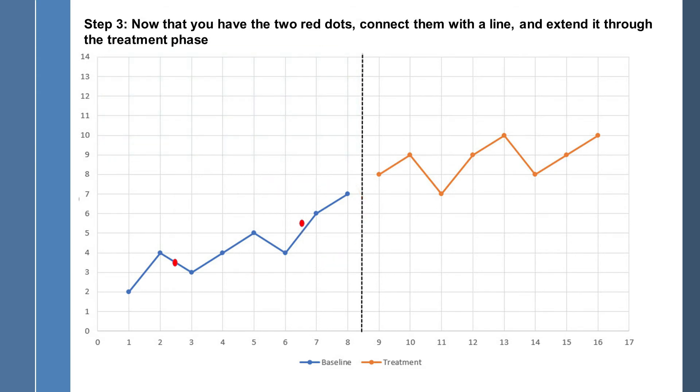So now we clean up the chart and we interpose our baseline trend line and you can see that I've carried it over into the treatment phase. So now with the baseline trend line in place, we can see that in fact the treatment phase scores are doing nothing more than we would expect by the normal progression of the baseline.